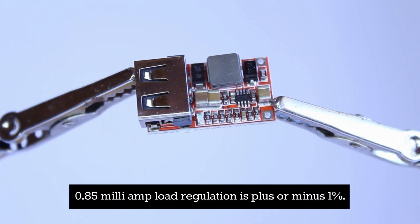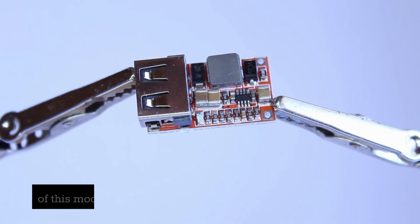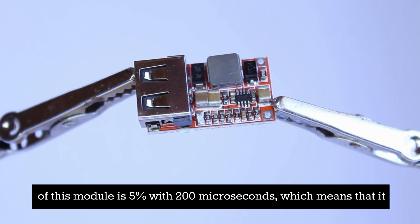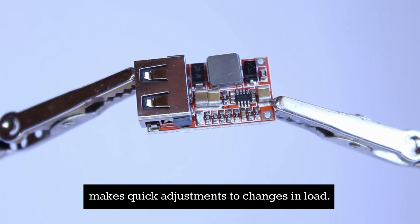Load regulation is plus or minus 1% while voltage regulation is plus or minus 0.5%. The dynamic response speed of this module is 5% with 200 microseconds which means that it makes quick adjustments to changes in load.